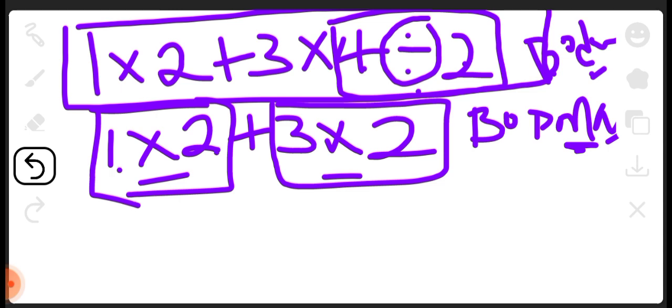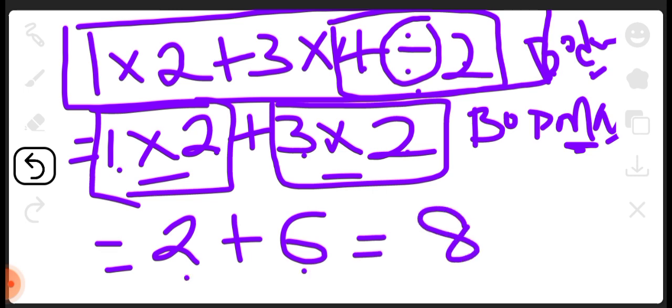1 times 2, that is 2. 3 times 2, that is 6. Okay, this will give us 2 plus 6, which equals 8. That is the answer to the question. Thank you.